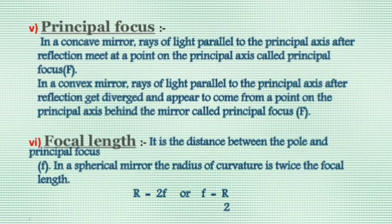Focal length is the distance between the pole and the principal focus. In a spherical mirror, the radius of curvature is twice the focal length — that is, R = 2F, or F = R/2.